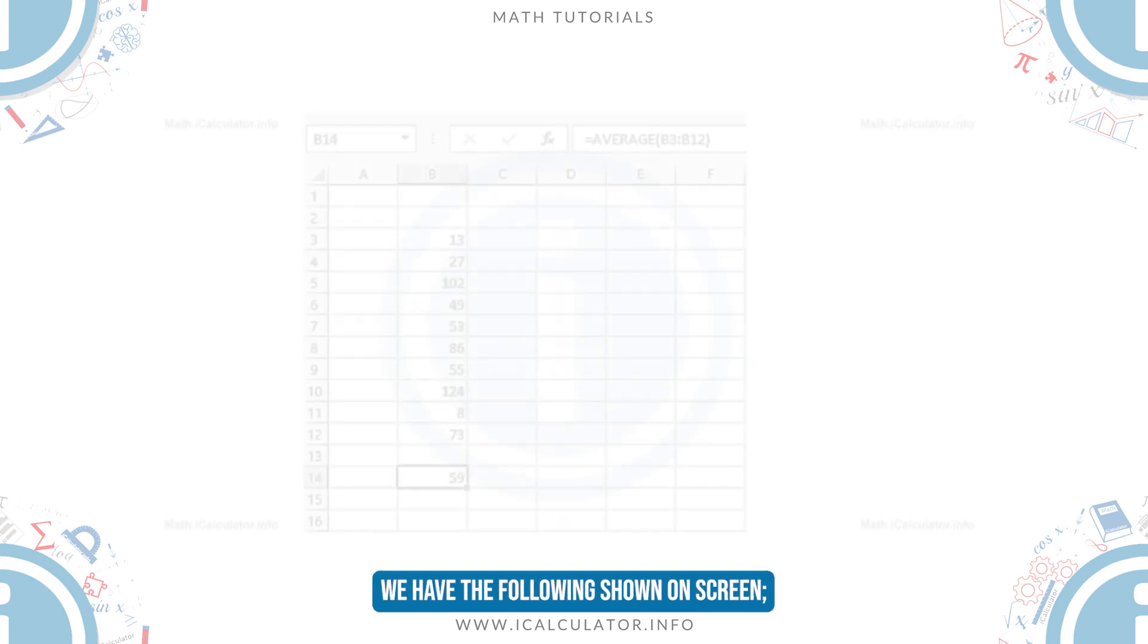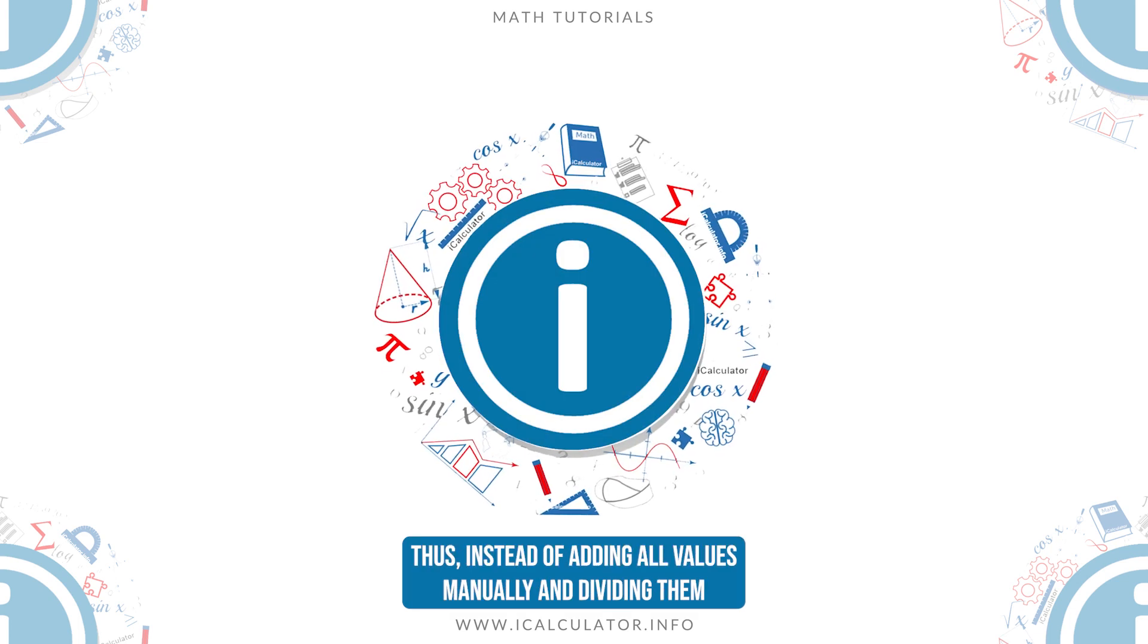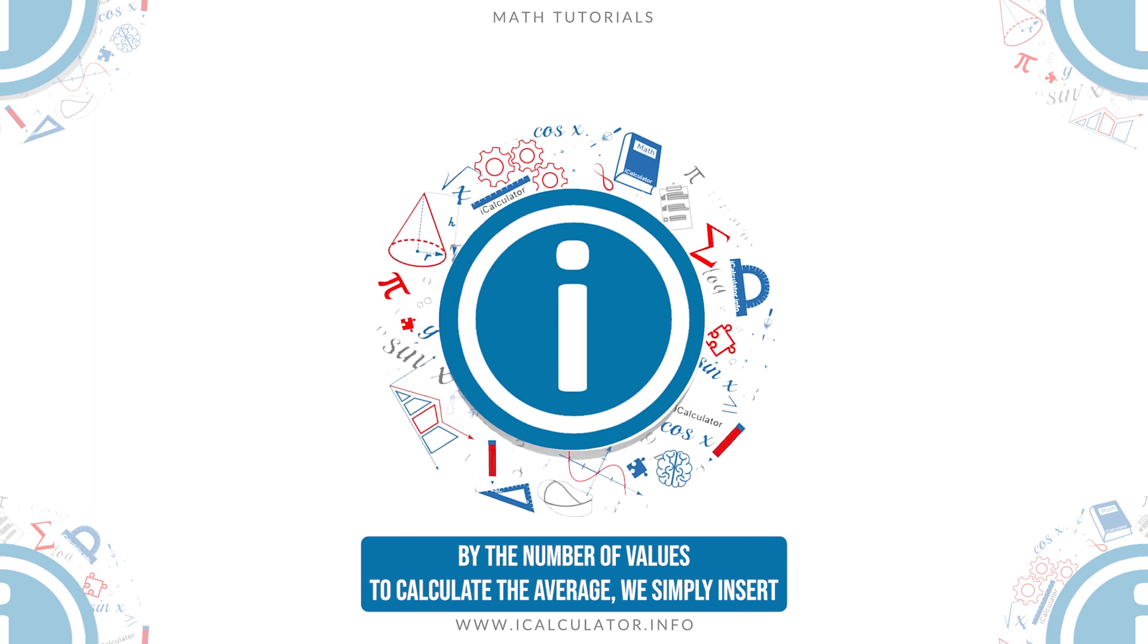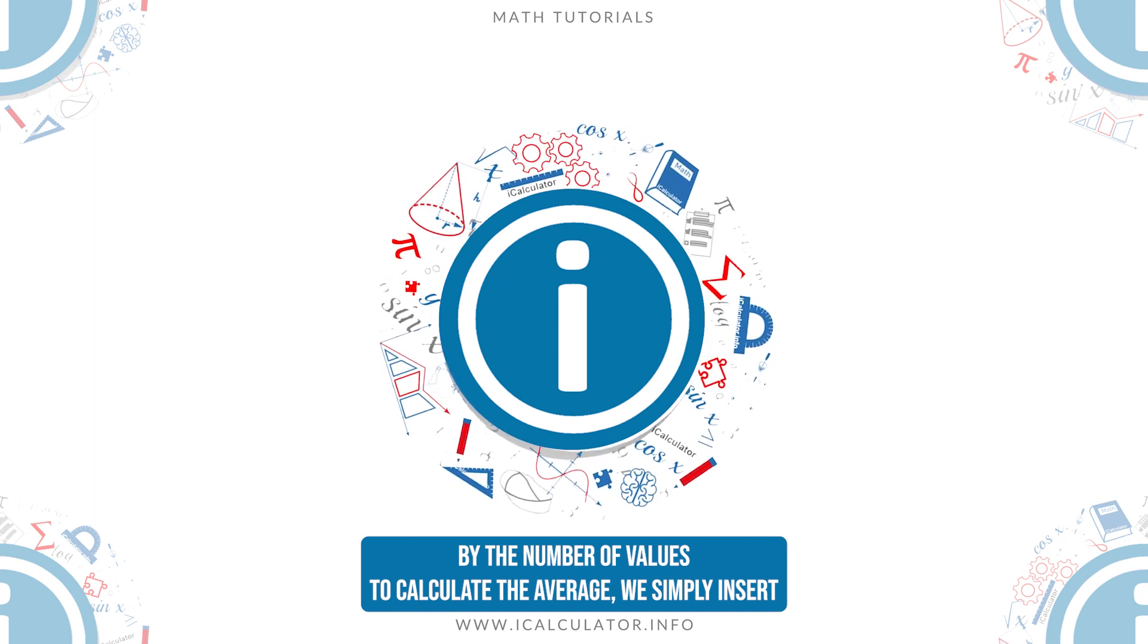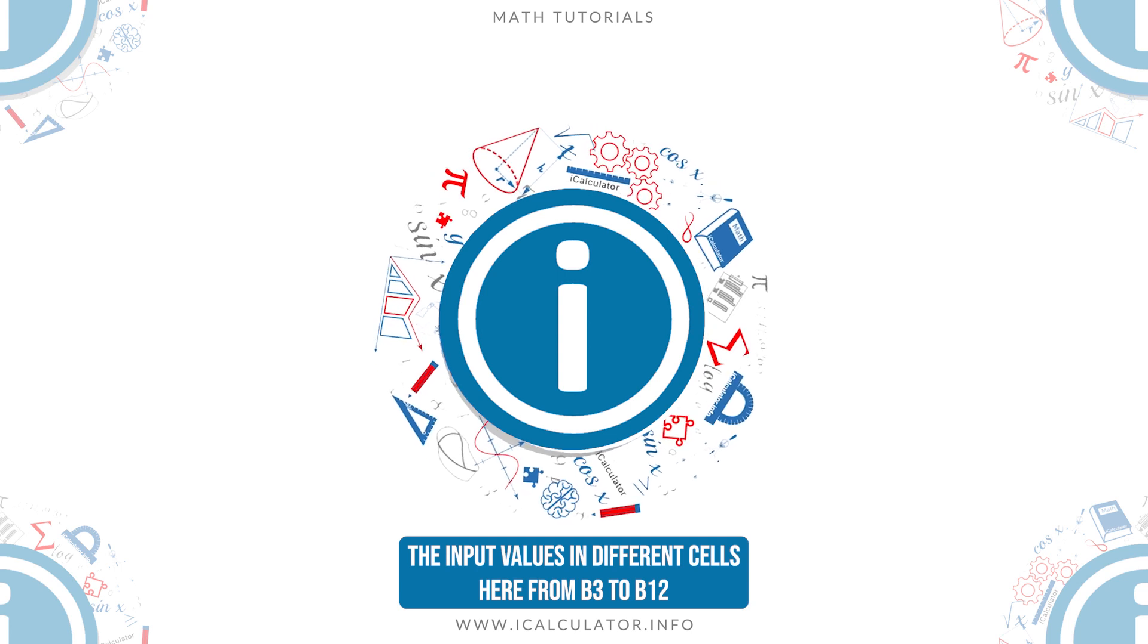We have the following shown on screen. Thus, instead of adding all values manually and dividing them by the number of values to calculate the average, we simply insert the input values in different cells, here from B3 to B12.